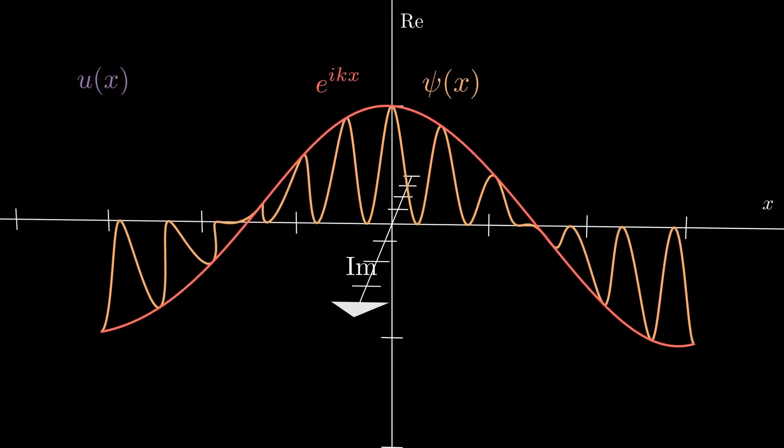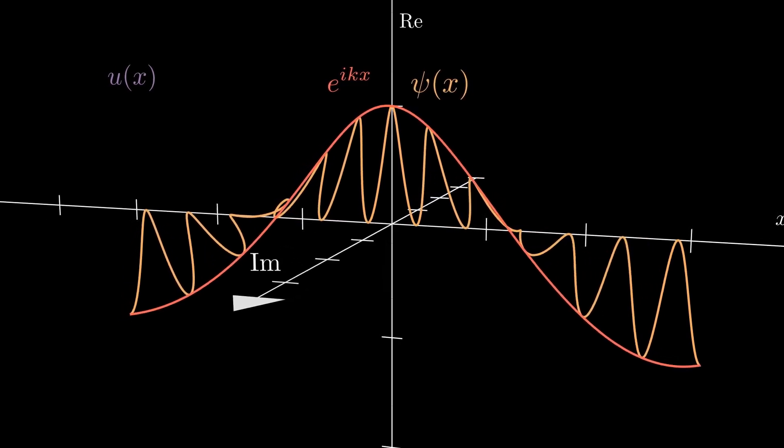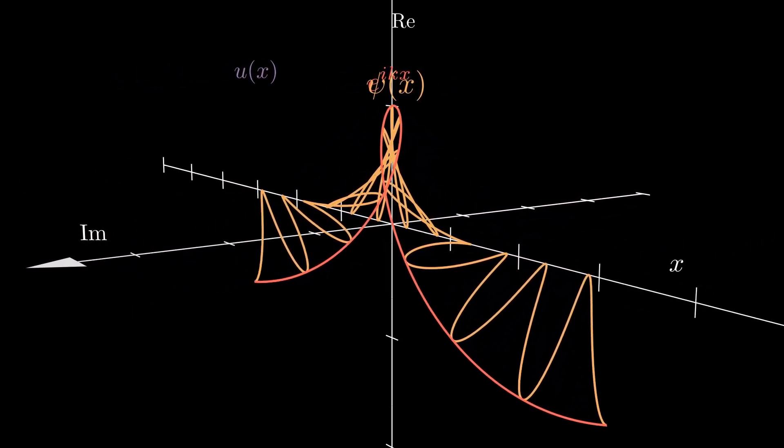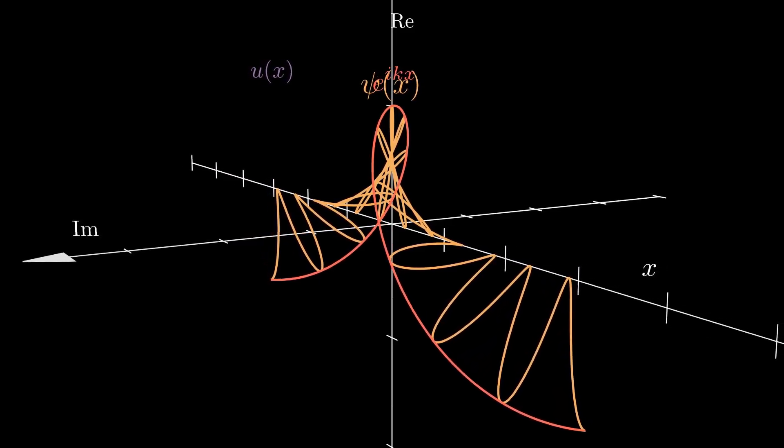Note that while I displayed the u of x function as only being real valued, this is not necessarily the case, and u of x can be complex valued. And in this case, it wouldn't be wrapped so nicely, but rather every point would be rotated an angle k x corresponding to whichever point it was at.